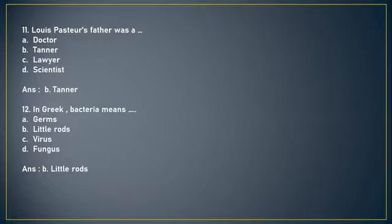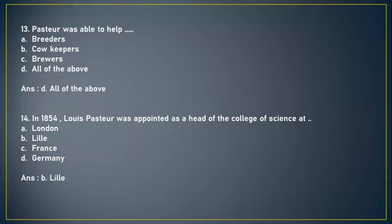Next question: Pasteur was able to help (A) breeders, (B) cow keepers, (C) brewers, or (D) all of the above. The answer is option D, all of the above. Next question: In 1854, Louis Pasteur was appointed as head of the College of Science at (A) London, (B) Lille, (C) France, or (D) Germany. The answer is option B, Lille.